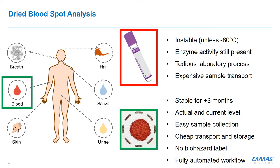On the other hand, dried blood spot analysis only requires a few droplets of blood put on a filter paper card. Here, PEth is stable for several months as the enzyme activity is stopped immediately after the blood is applied on the filter paper card and is dried. The sample collection is quite easy, so at-home sampling or sampling by the patient him or herself is possible. As soon as the blood is dried, we don't need to label it as biohazardous liquid anymore, and we can ship the samples by standard mail, which makes it quite cheap for transportation and storage.